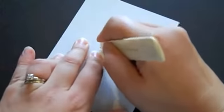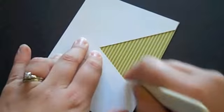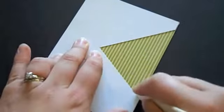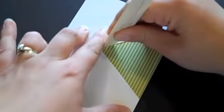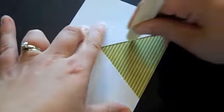I'm just going to take a bone folder and use the guides of the template to score my two fold lines.